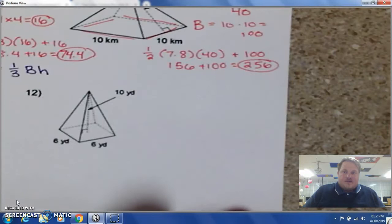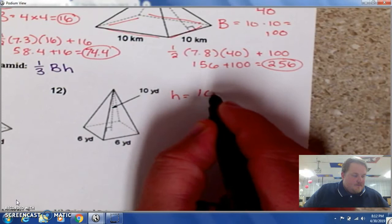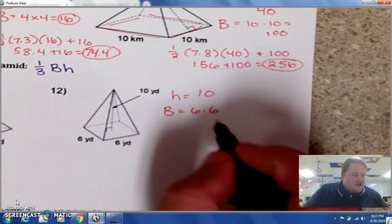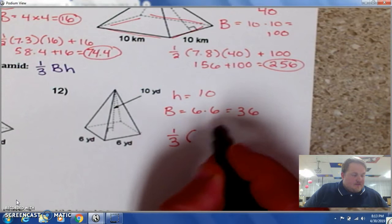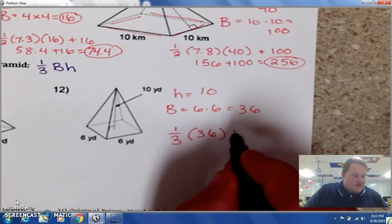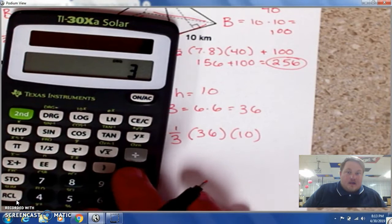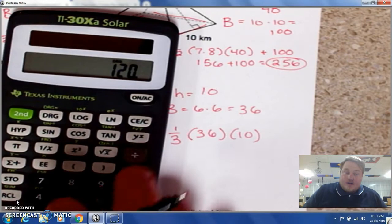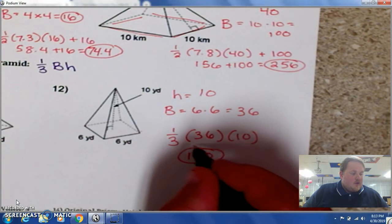In this case, our h up and down line is 10. And our base is 6 times 6, that's 6 times that 6, which is 36. 1 third times 36 stands for B times our h, which is 10. 1 divided by 3 times 36 times 10 gives us a grand total of 120. And I want you to double circle that.